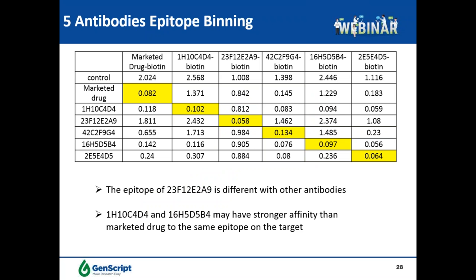In the last slide of this case study, epitope binning was performed for the five antibodies to see whether they share the same epitope. Four antibodies competed with the marketed drug for binding of antigen, showing they probably share the same epitope. In contrast, antibody 23F12E2A9 did not compete with the other four antibodies nor with the marketed drug, indicating it likely binds to a different epitope on the antigen.